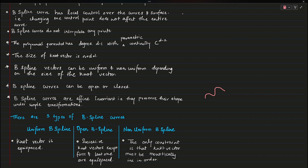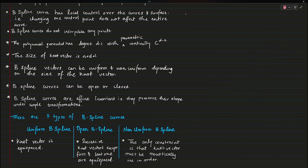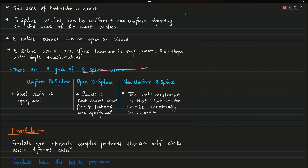B-spline curves are affine invariant, meaning they are transformation-resistant. For example, if I scale a B-spline curve by 10x, the shape essentially remains the same. They preserve their shape under simple transformations like scaling, translation, and rotation.